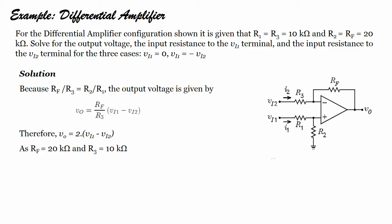For the differential amplifier configuration shown here, it is given that R1 equals R3 equals 10 kilo-ohms and R2 equals Rf equals 20 kilo-ohms. We have to find the output voltage Vo, the input voltage, and input resistance for three cases — including V1 equals 0 and V1 equals minus Vi2. Let us see them one by one.